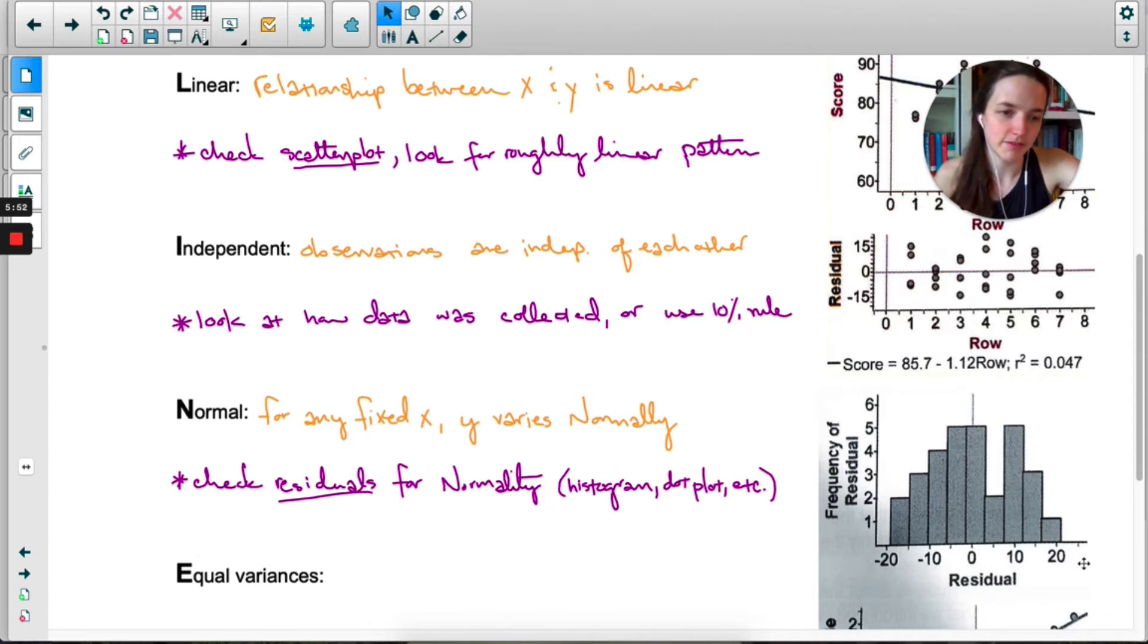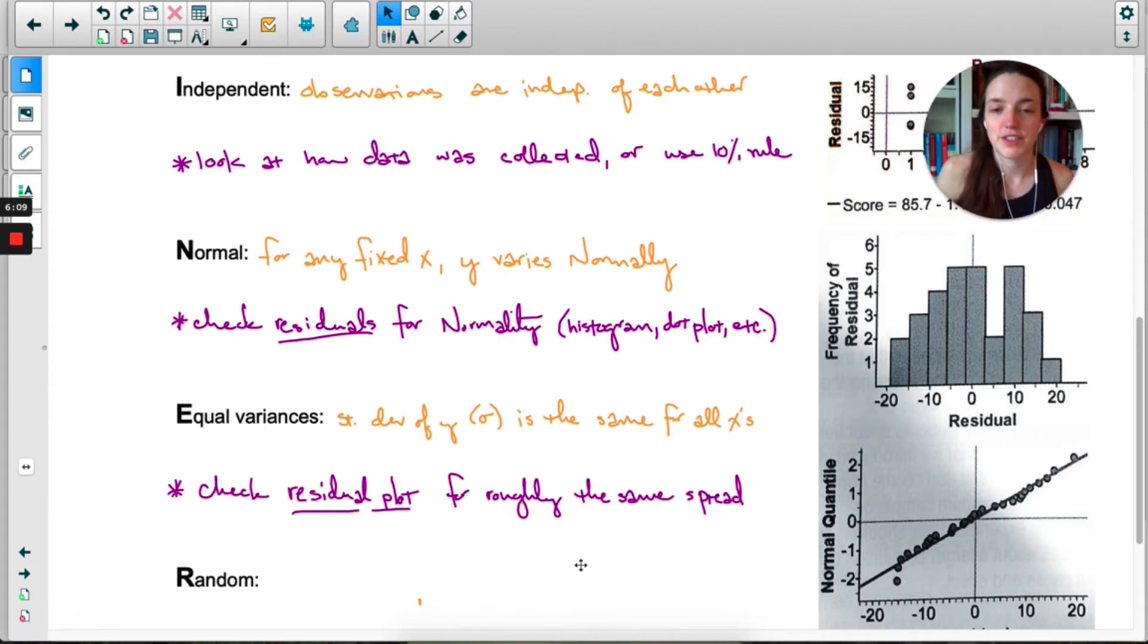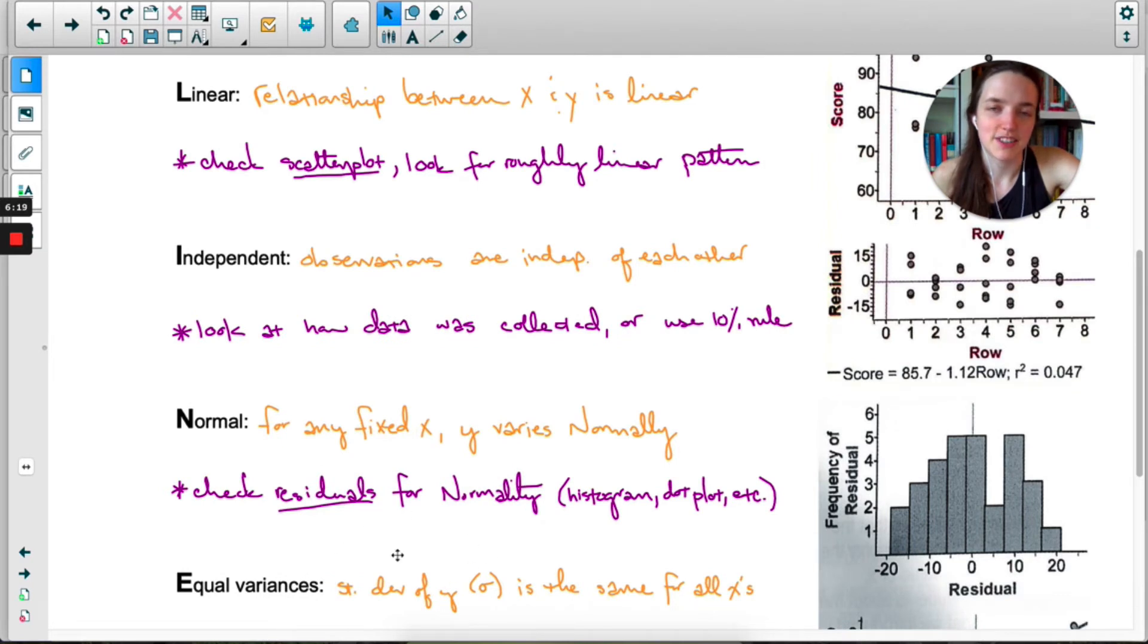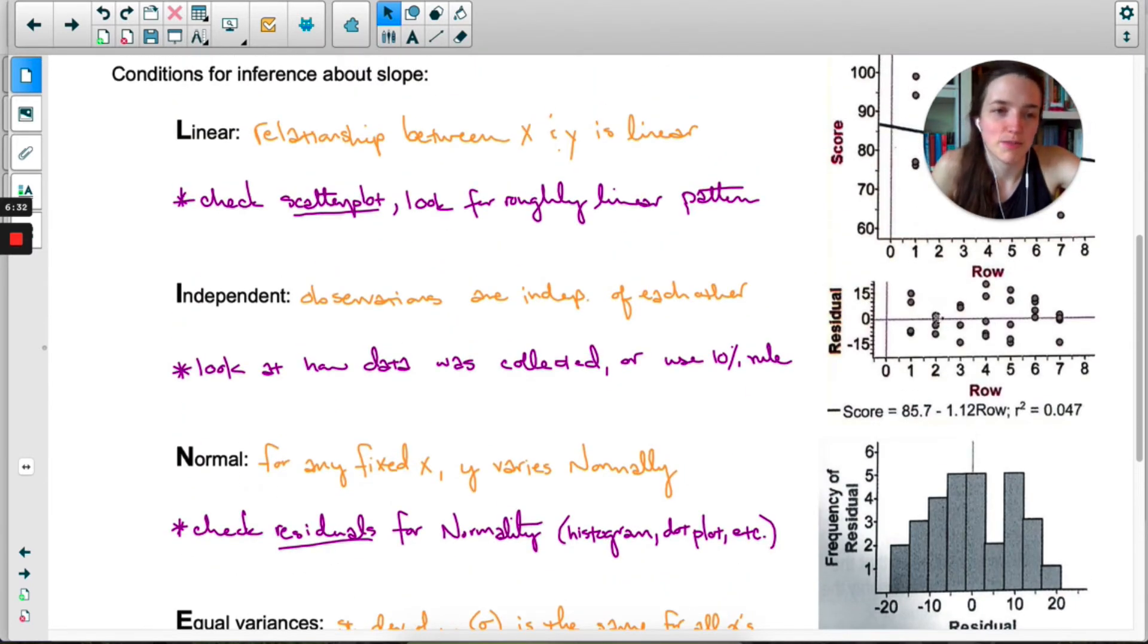The next one is called equal variances. The standard deviation of y has to be the same or close to the same for all the x's. Look at the residual plot—you want to see roughly the same spread. The standard deviation isn't going to be exactly the same for all x's, but you want close. When you look at the residual plot, there's a couple that are far away on top, but a couple far away on the bottom too. We can say mostly the spread is the same. There's no clear pattern.